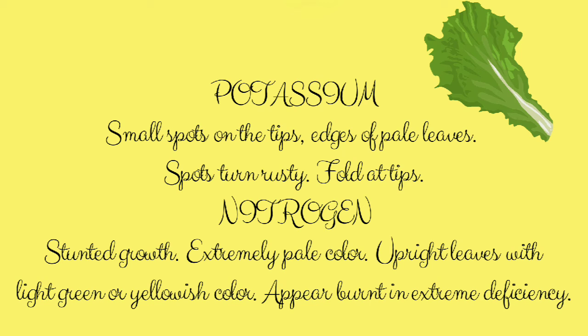In case of nitrogen deficiency, stunted growth is a major symptom. Extremely pale color will be seen, the leaves will be very upright with a green or yellowish tint, and they will appear burnt in cases of extreme deficiency.